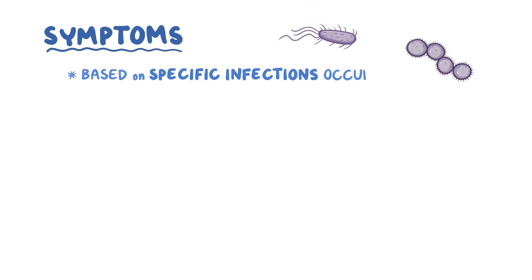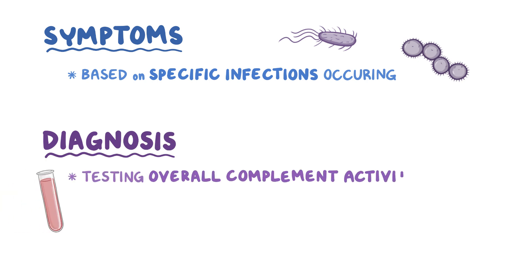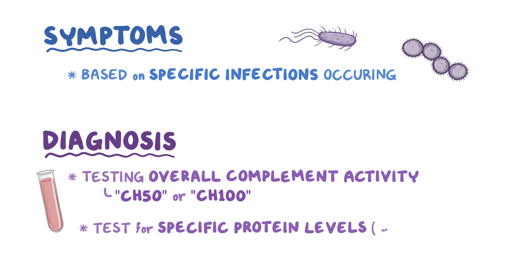Symptoms of complement deficiency are usually based on the specific infection that might be happening. Diagnosis can be done through blood analysis by testing overall complement activity, denoted by CH50 or CH100. If there's a deficiency, it's also possible to test for specific protein levels like C3 or C4.